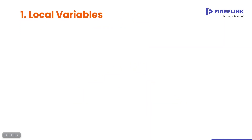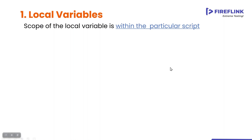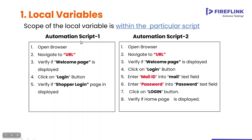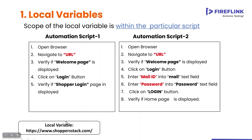Talking about local variable — all these variables are differentiated by their scope, i.e., where you can access them. When I say local variable, you can access it only inside that particular script. We have two automation scripts — automation script one and automation script two. In automation script one, I am creating a variable called URL as a local variable. Since it's a local variable, the scope is within that particular script — I can access this variable only inside this particular script.